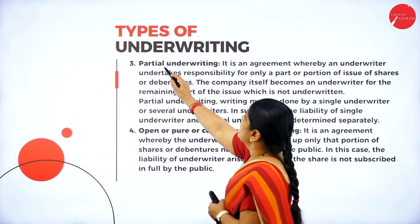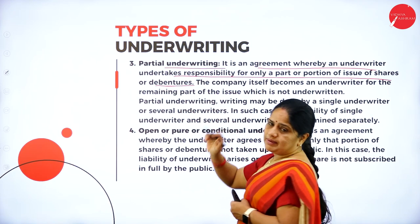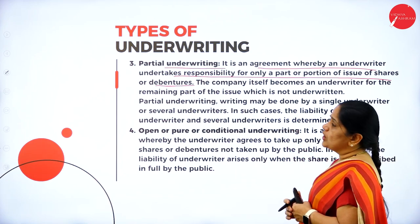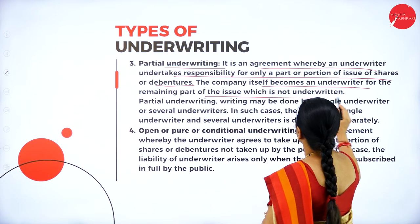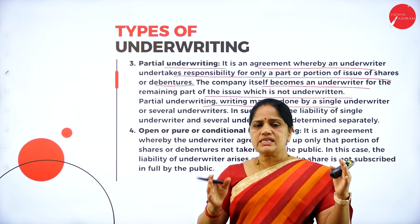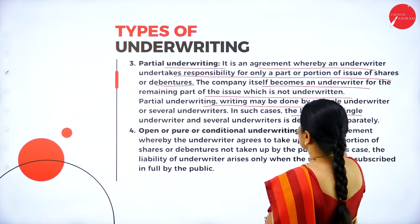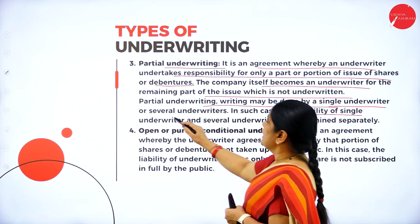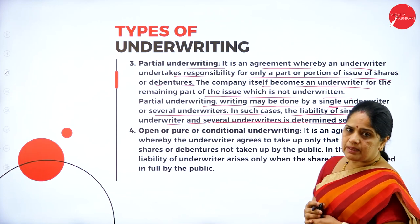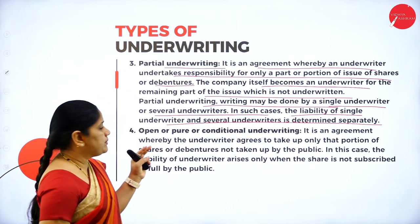The third type is partial underwriting. It is an agreement whereby an underwriter undertakes responsibility for only a part or portion of the issue of shares or debentures. In partial underwriting, only a part of the issue is underwritten; for the remaining part, the company itself becomes the underwriter. For example, if there is an issue of 1 lakh shares and only 75,000 shares are underwritten, the company itself becomes the underwriter for the remaining 25,000. The liability of each single or several underwriters is determined separately.